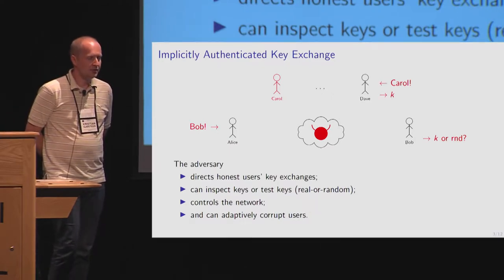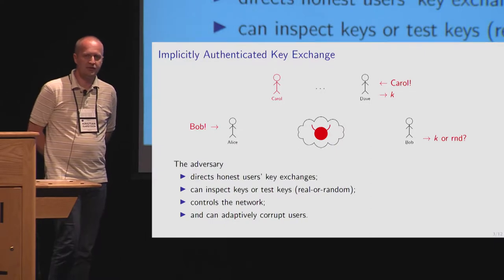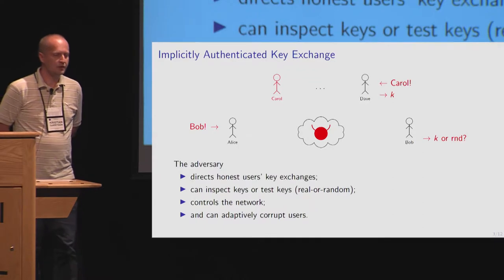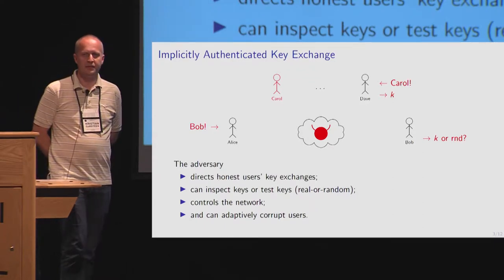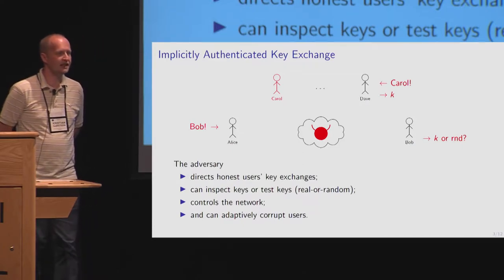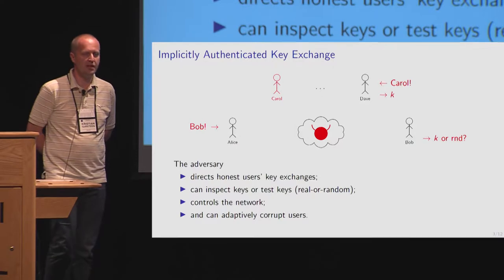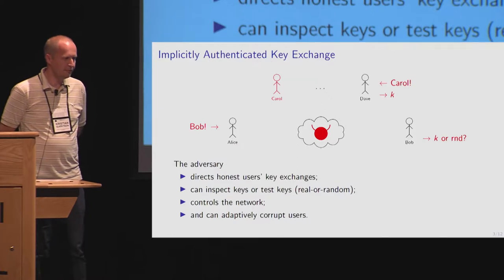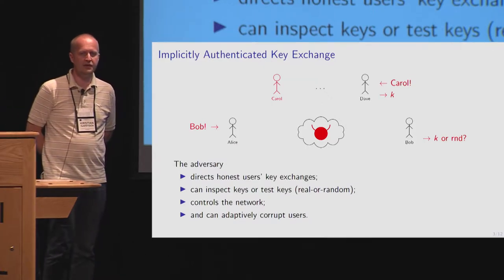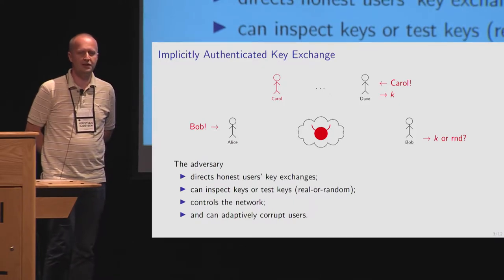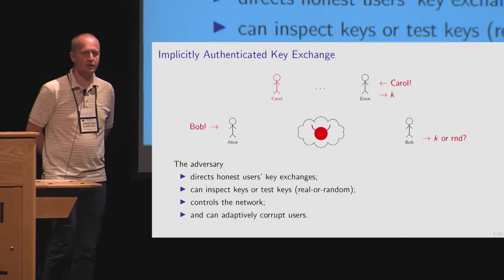The adversary can do a key reveal, which is simply learning some previous session key. He can also do a test query where he gets the real or the random key — this is what he's supposed to decide: did he see a random string, or the key they actually agreed on? In our model, the adversary is allowed to do many test queries, because that's very convenient when you're going to use your key exchange as a sub-protocol in some other protocol you're analyzing.